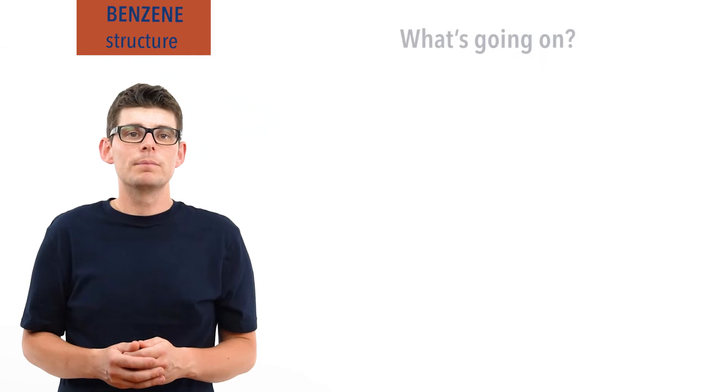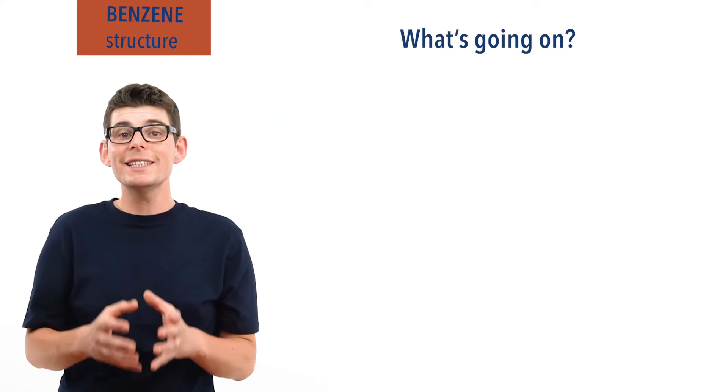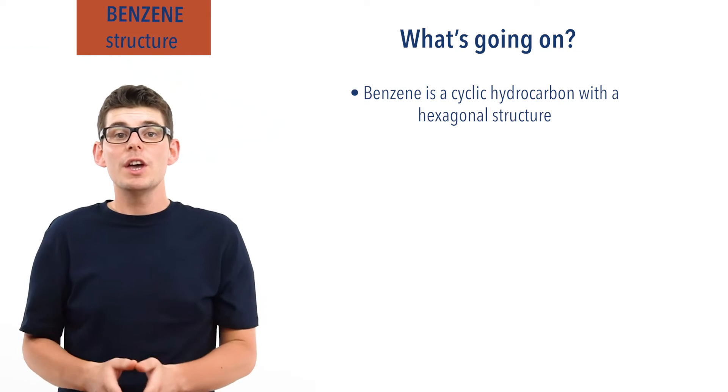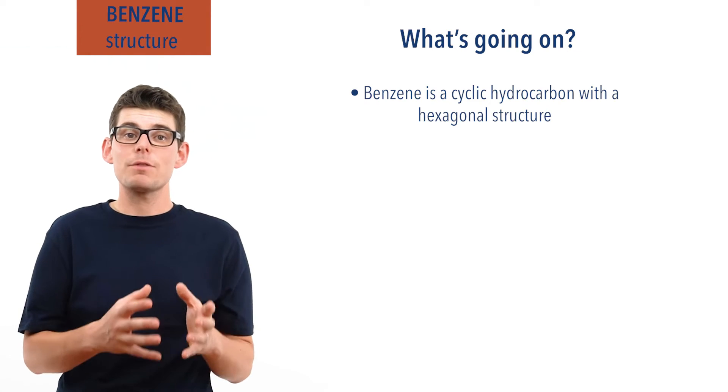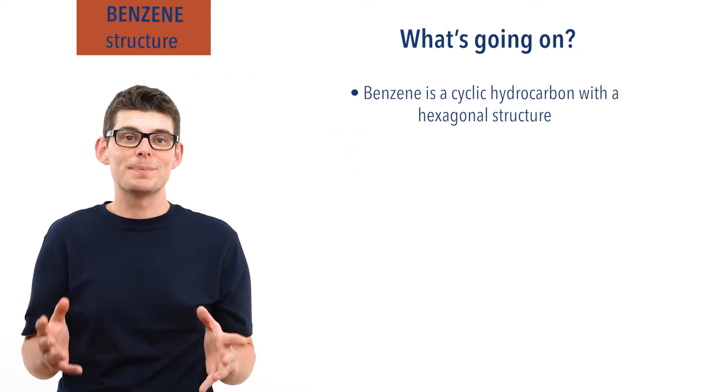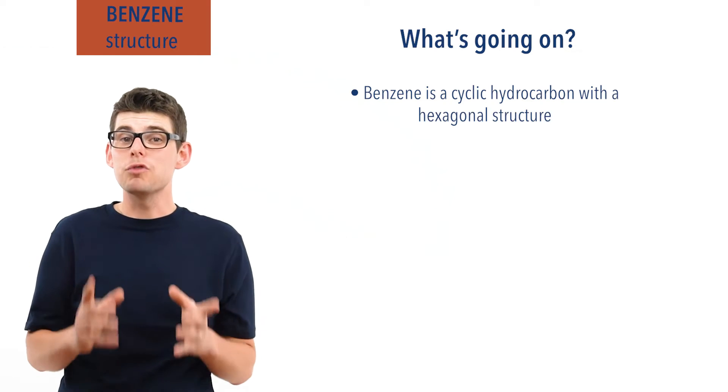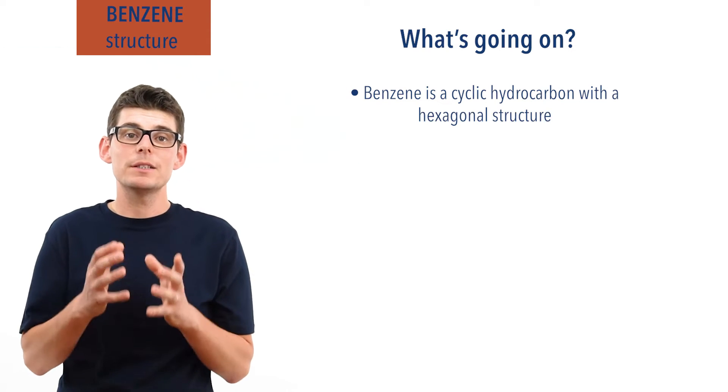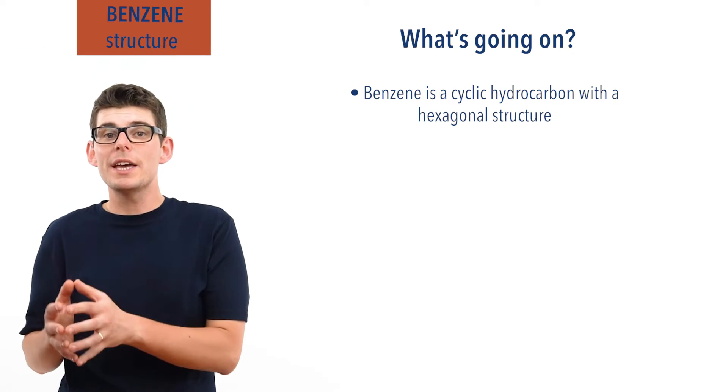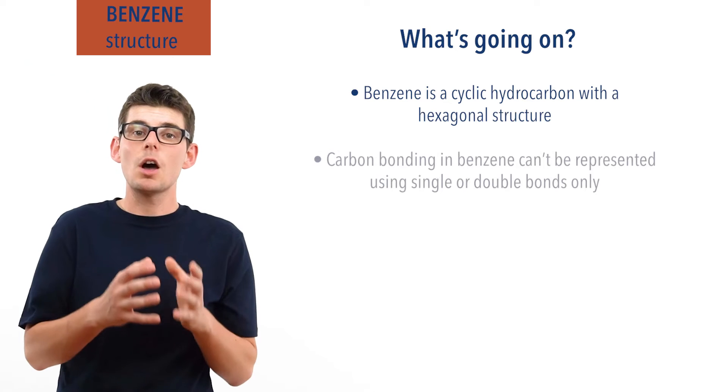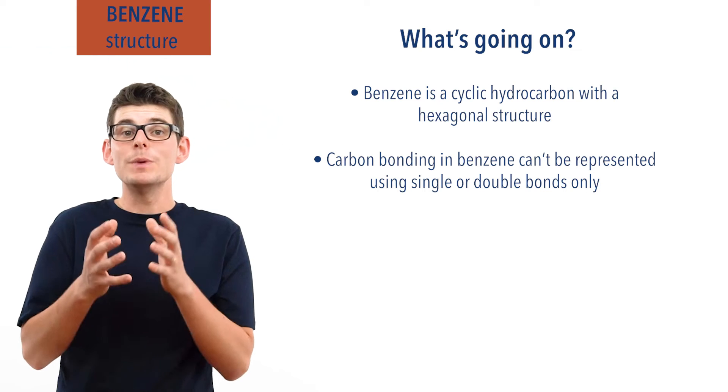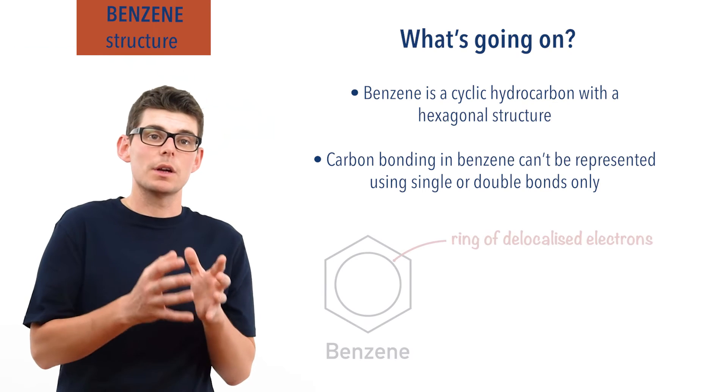So what's going on? Well, Kekulé was right in his prediction that benzene is a cyclic hydrocarbon and his proposed hexagonal structure has been proved correct with modern x-ray diffraction and crystallography, meaning he still deserves massive respect. However, he was wrong about the alternating single and double carbon bonds. The bond length data and enthalpies of hydrogenation show that the carbon bonding can't be represented using single or double carbon bonds. Instead, we now show the bonding with a delocalized ring of electrons.